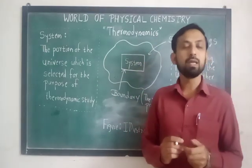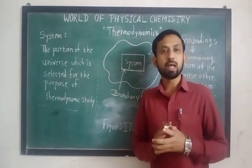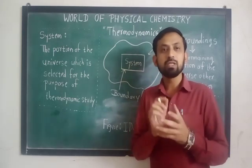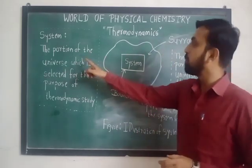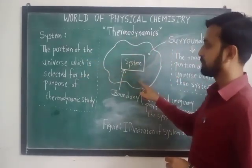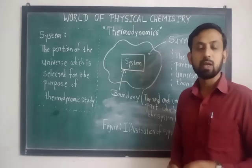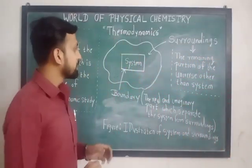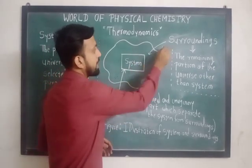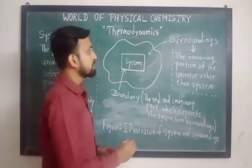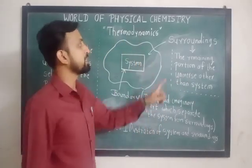Now let us discuss what we mean by the terms system and surrounding. From the universe, for the purpose of thermodynamic study, we select a certain portion — that portion we call as a system. Simply defined, a system is the portion of the universe selected for the purpose of thermodynamic study. The part other than the system is called as the surroundings — the remaining portion of the universe other than the system.